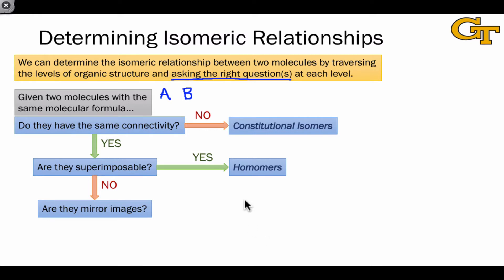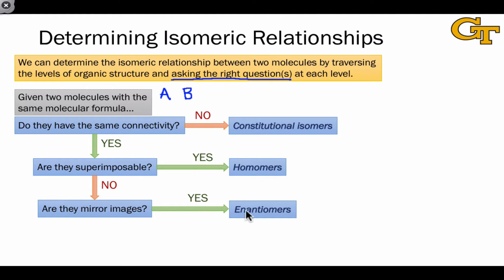If they can't be superimposed, this implies that the molecules are stereoisomers. The difference between the two types of stereoisomerism is really: are the molecules mirror images or not? If A and B are mirror images and are not superimposable, they must be enantiomers. If they are not mirror images and not superimposable, implying that they're stereoisomers, then they must be diastereomers.